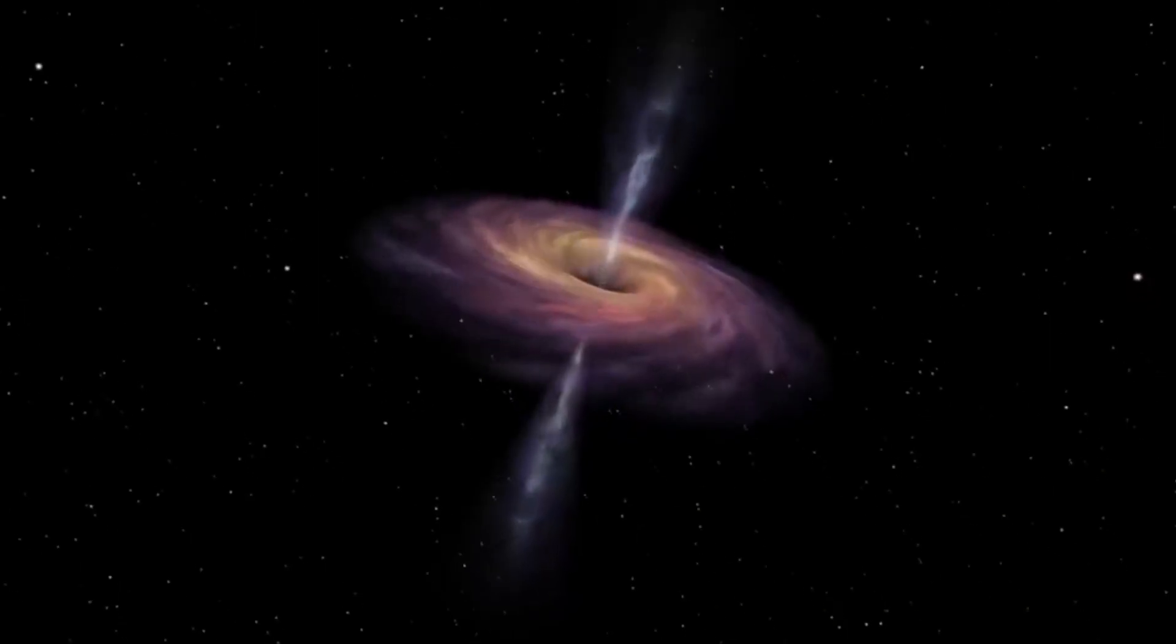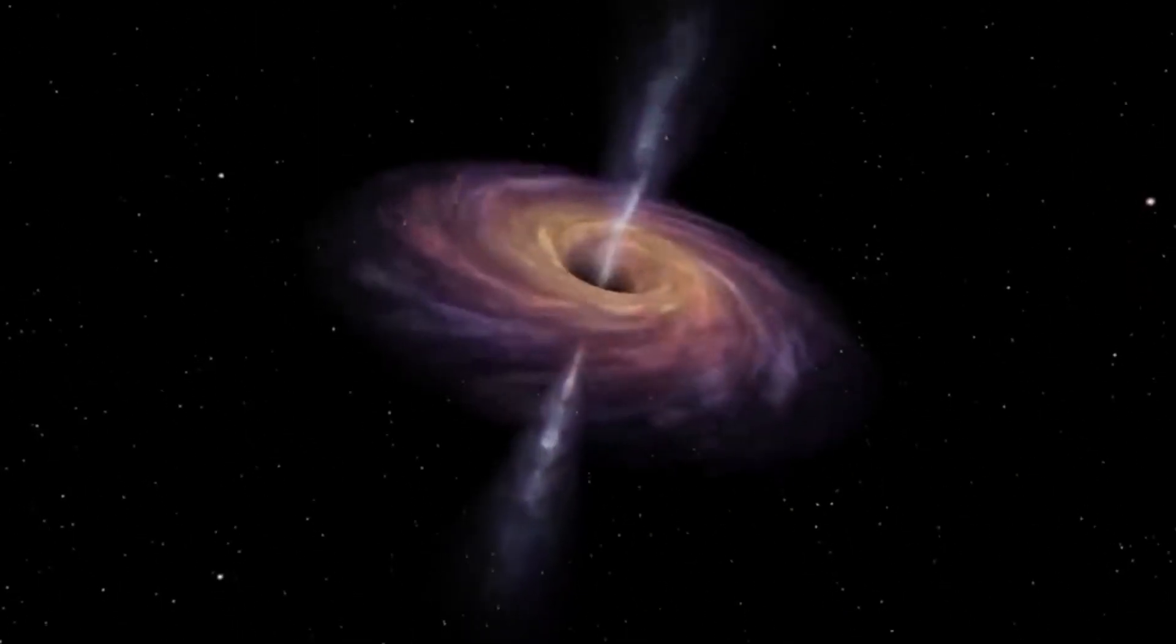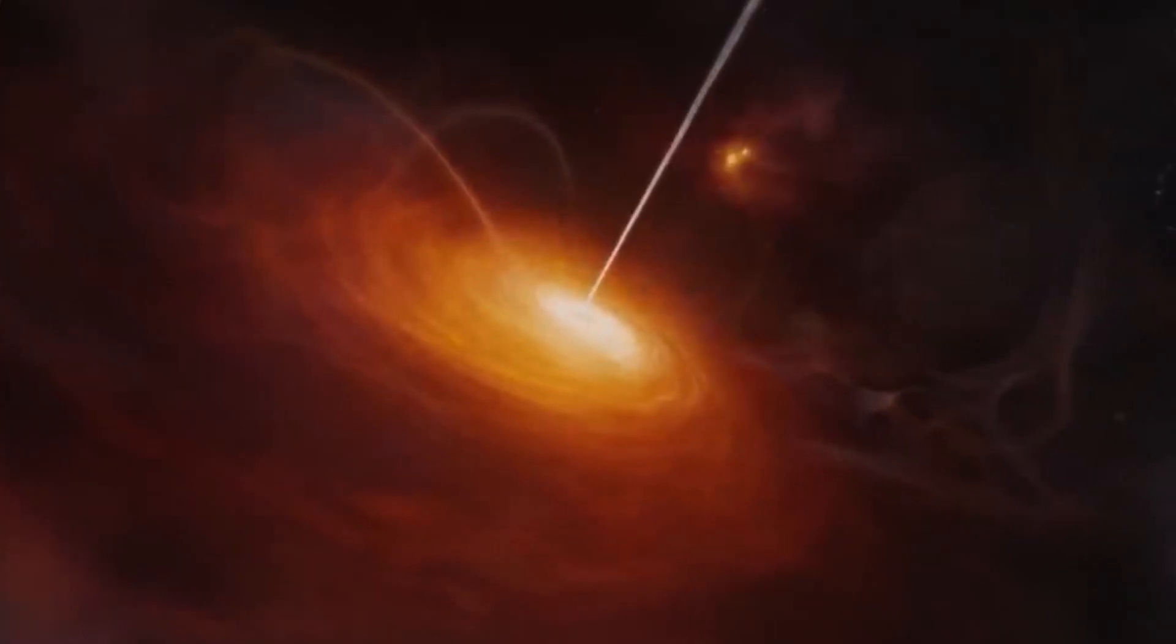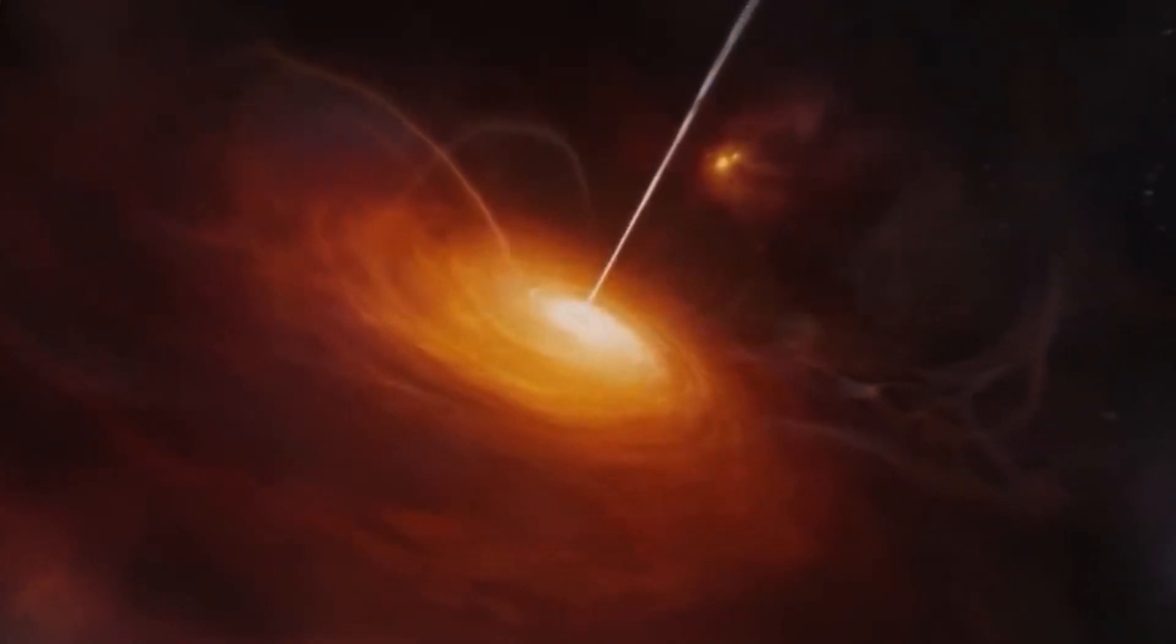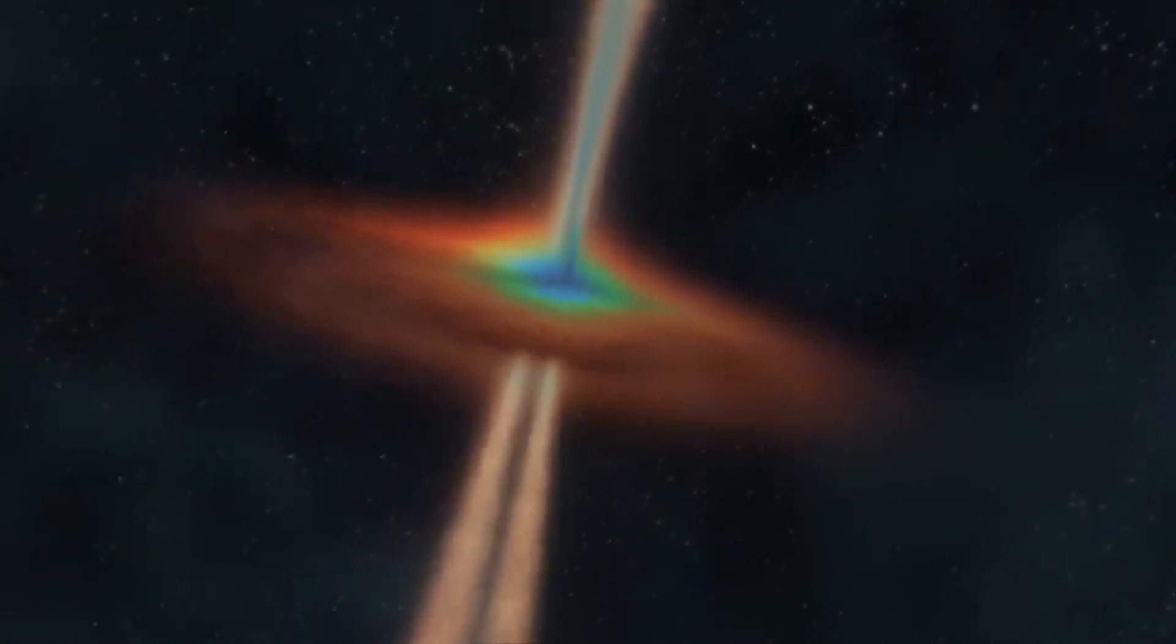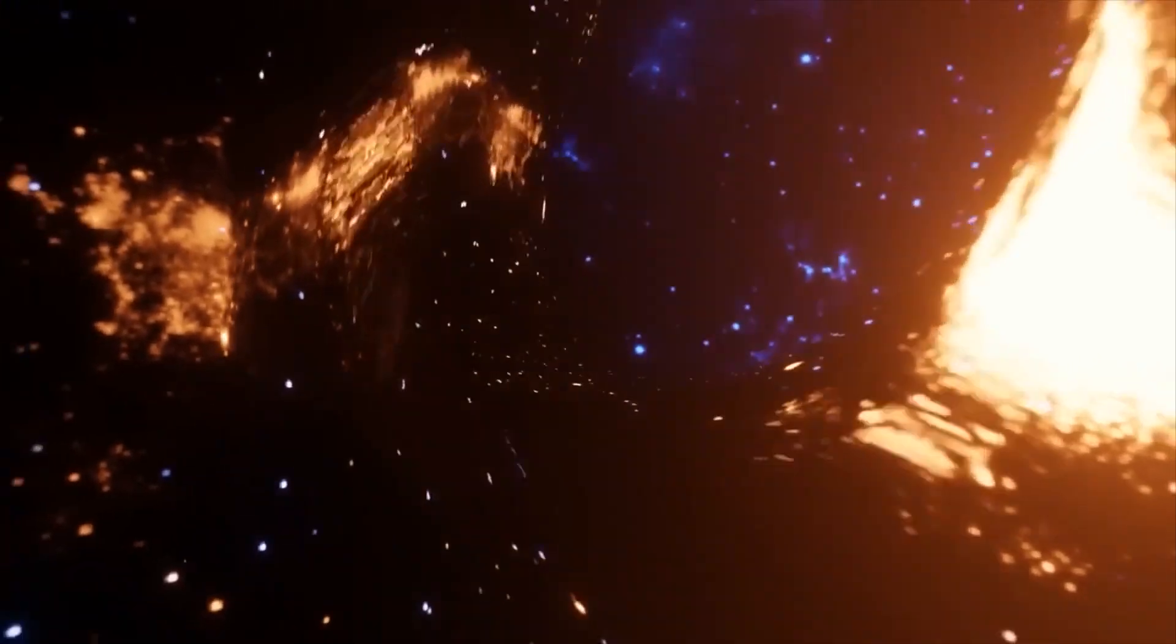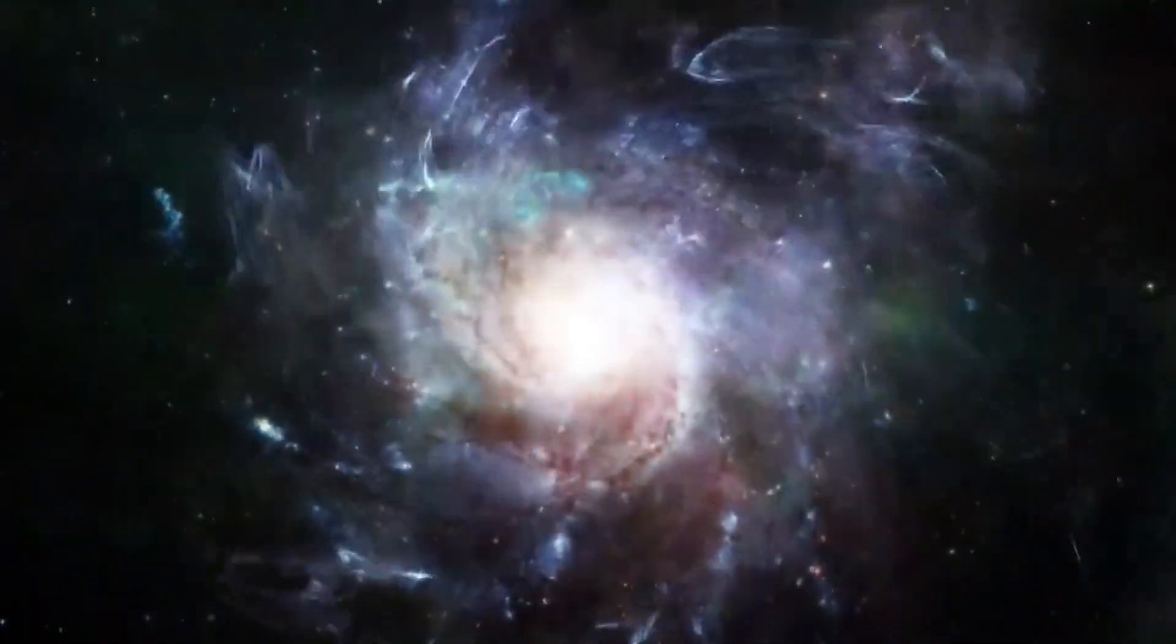They were able to determine how much gas the black hole was consuming and how quickly its host galaxy formed stars. Scientists discovered that CEERS 1019 does not appear as a single circular disk but rather as three brilliant clusters. This indicates that the black hole in the galaxy may be partially fueled by a galaxy merger, which may also result in more star creation.